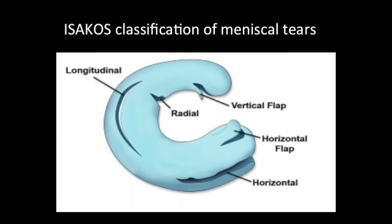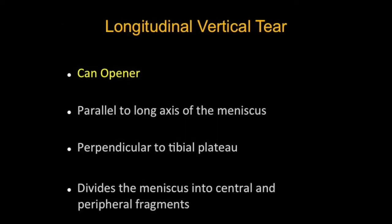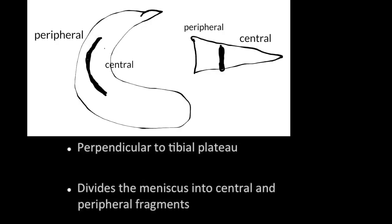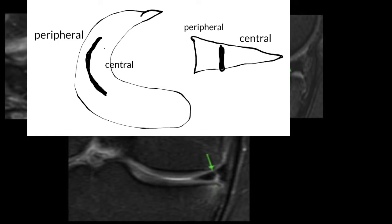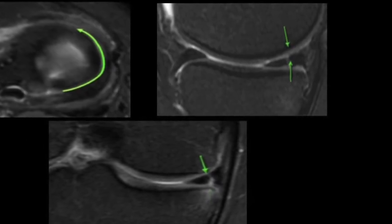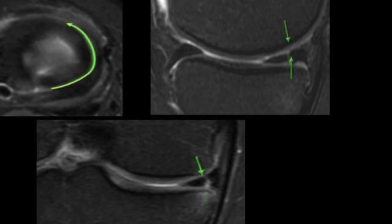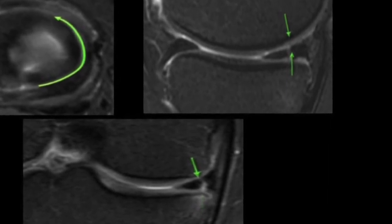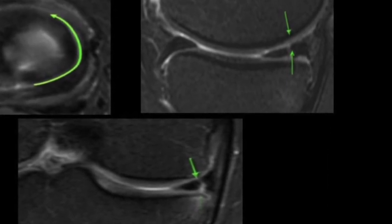Coming to the longitudinal vertical tear. This is the tear where the tear runs parallel to the long axis of the meniscus and perpendicular to the tibial plateau, dividing the meniscus into a central and a peripheral fragment. We see the PD hyperintense line reaching both surfaces — a classical vertical meniscal tear.